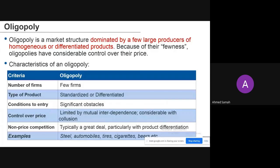Regarding control over price, it depends on the type of oligopoly. If firms operate with mutual interdependence, there is limited control over price; but if they are in a collusion, there is considerable control over price. Non-price competition, particularly through product differentiation, is also typically significant. Examples of oligopoly markets include steel, automobiles, tires, cigarettes, beers, and video consoles.